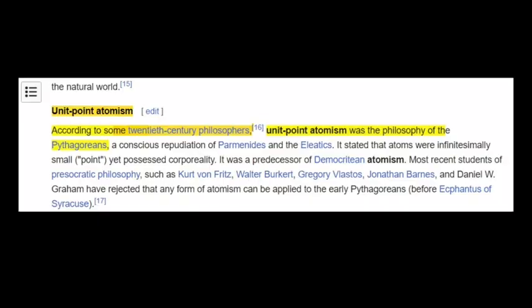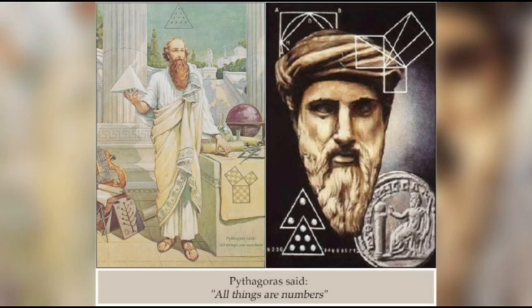According to some 20th-century philosophers, unit-point atomism was the philosophy of the Pythagoreans. Pythagoras said: 'All things are numbers.'